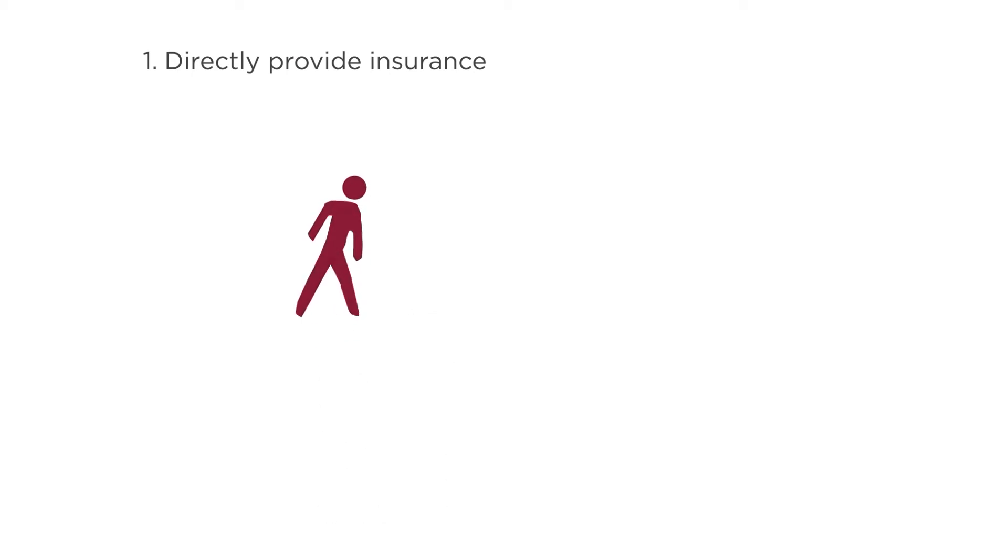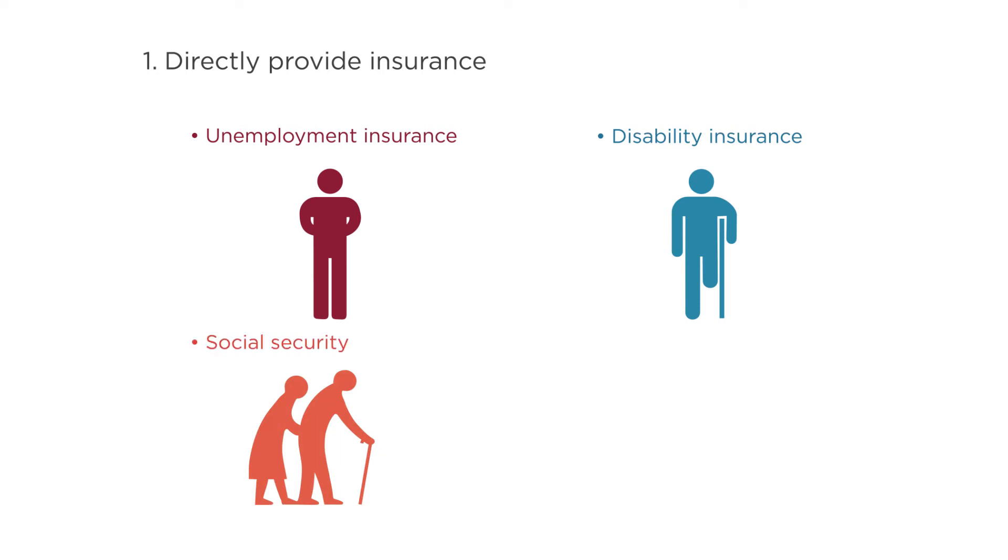For example, if you lose your job, you get unemployment insurance, which gives you payments until you find a new job up to a time limit. If you get seriously disabled and can't work anymore, you get disability insurance, which provides you an income to support you without working. And if you retire and don't earn any more income, you get social security, which provides a payment from the point of retirement until the point of death.